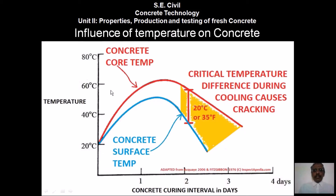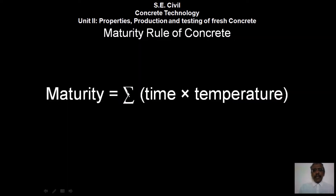Influence of temperature on concrete: the graph shows the concrete surface temperature in blue and the concrete core temperature in red. The difference between these two temperatures is critical — during cooling, a large temperature difference causes cracking. There should not be too much difference between the inner core and the surface of the concrete.